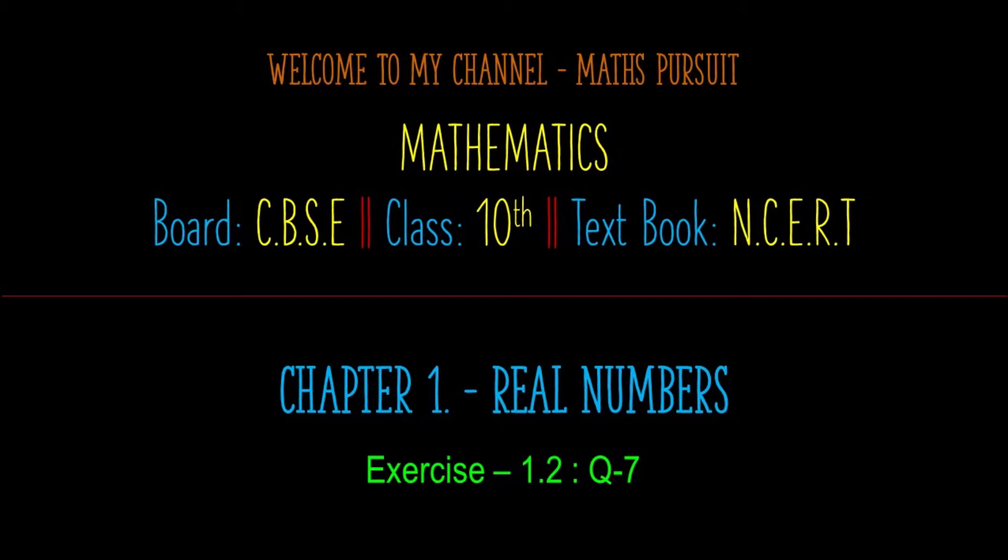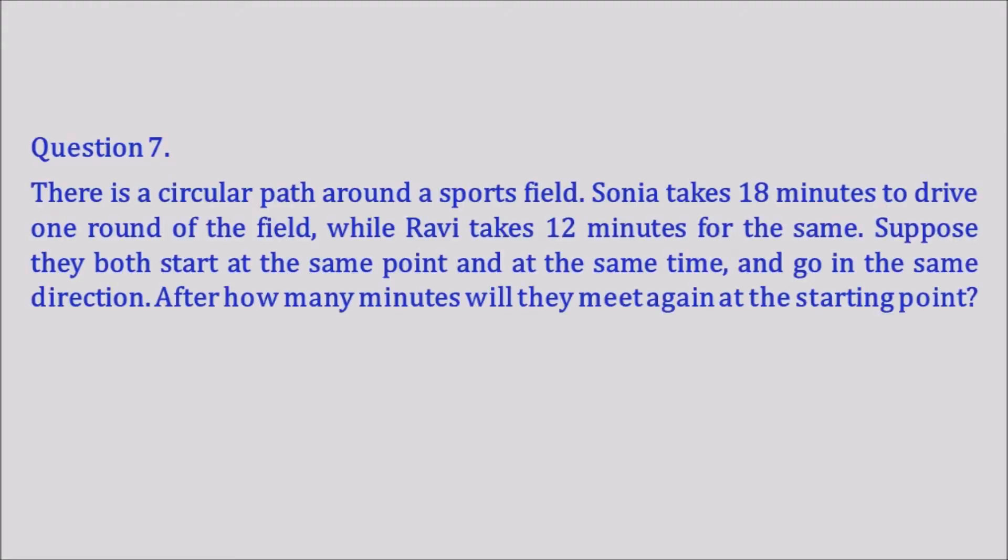Let's see what we have in the question. There is a circular path around a sports field. Sonia takes 18 minutes to drive one round of the field while Ravi takes 12 minutes for the same. Suppose they both start at the same point and at the same time, and go in the same direction. After how many minutes will they meet again at the starting point?